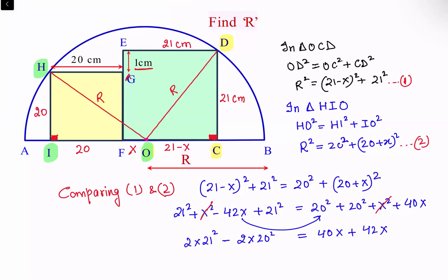Now here this term is, your two times of 21 square, that's 882 minus 800. This is 82 X. We'll solve it. We'll get value of X as one.